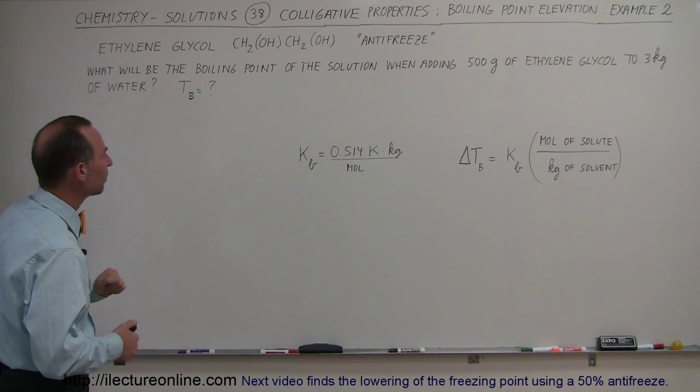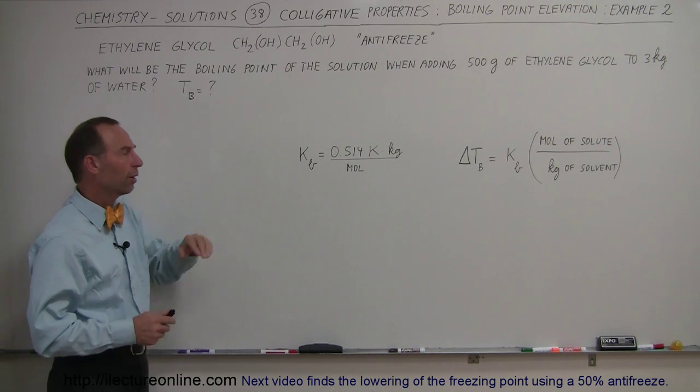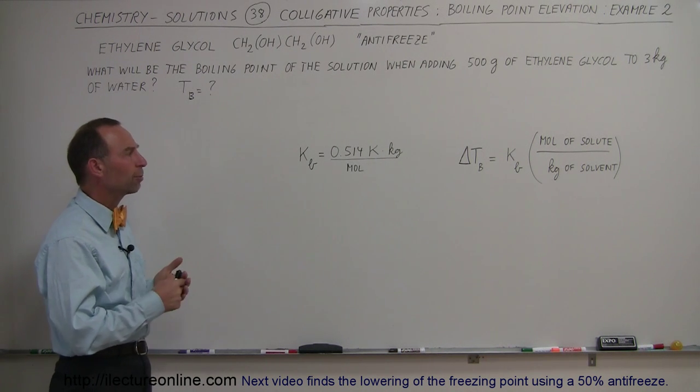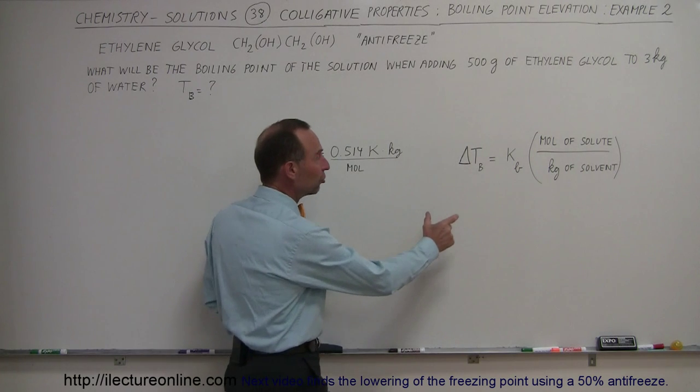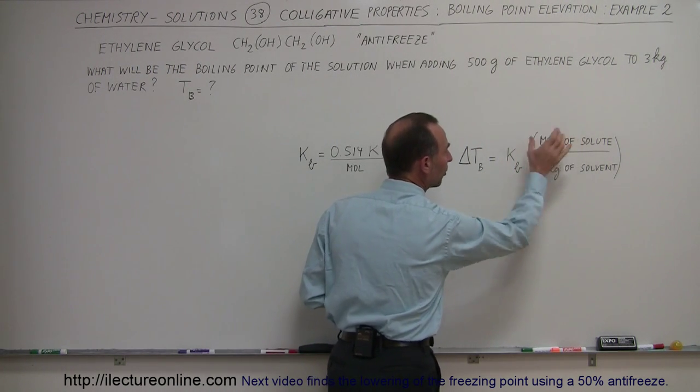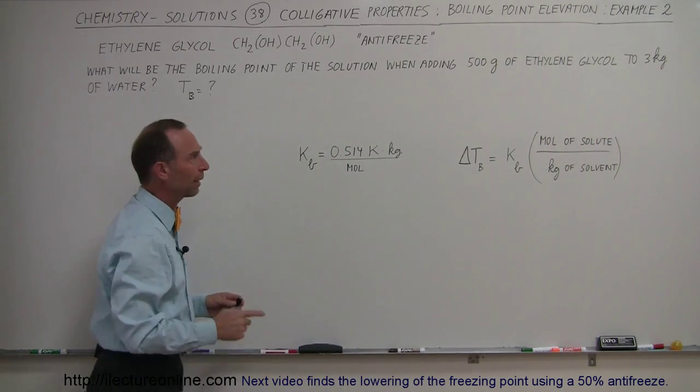So we're looking for T sub B, the new boiling point. Notice that the constant for water is 0.514 degrees Kelvin times kilograms per mole, and the way we calculate it is the change in the temperature is going to be equal to that constant times the ratio of the number of moles of solute in the solution per kilogram of solvent.